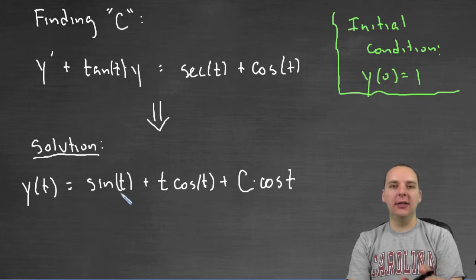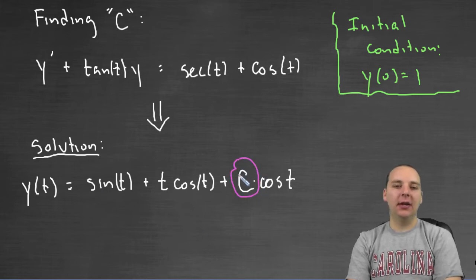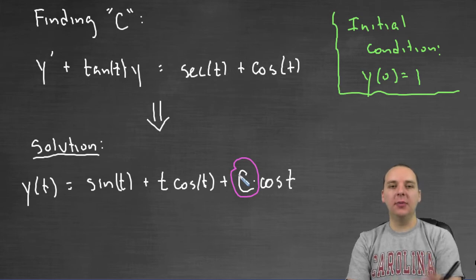That's not the main point of this video. What I want to look at is when we got our solution, part of that solution included a plus C, actually plus C times cosine t, as many of these examples will have a plus C for your final answer.